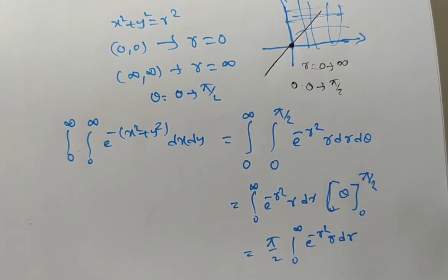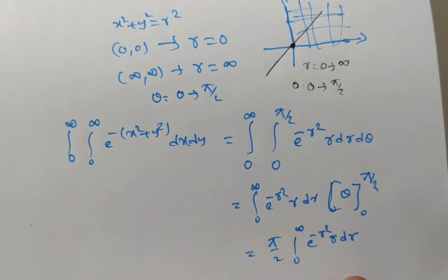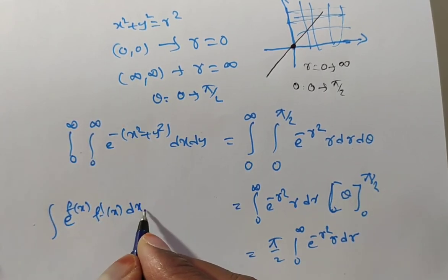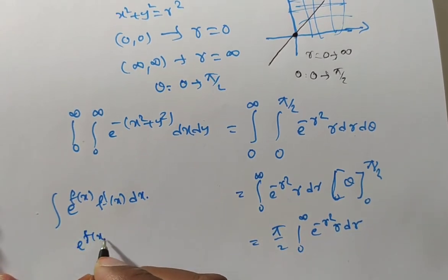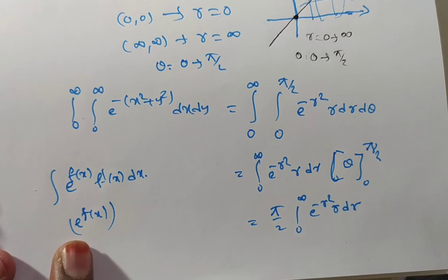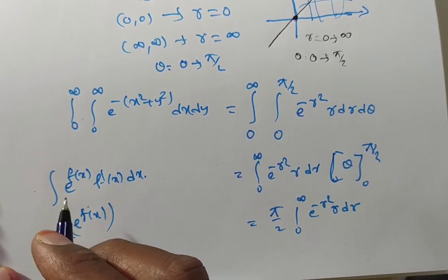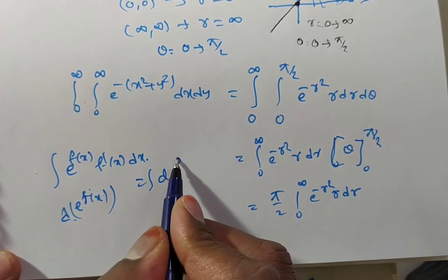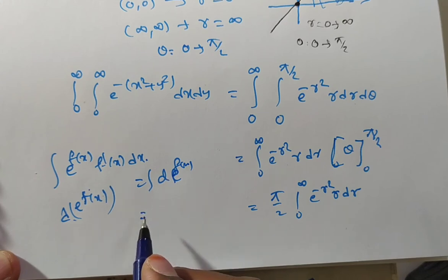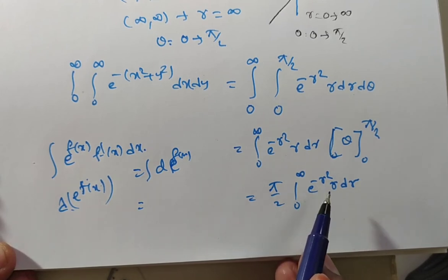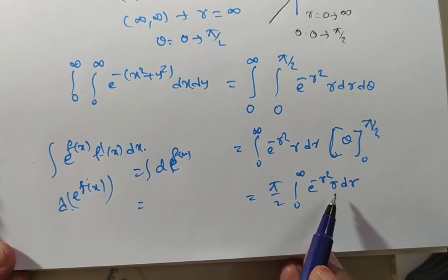Now we have to evaluate only a single integral. Here you can put r squared equal to some variable t by change of variable, or use another formula. The formula is: the integral of e to the power f(x) times f'(x) dx equals e to the power f(x) directly. For e to the power of minus r squared, the derivative of minus r squared is minus 2r. So multiply and divide by minus 2.